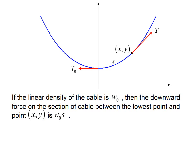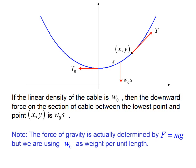If the linear density of the cable is w sub o, then the downward force on the section of cable between the lowest point and the point xy is w sub o s. Note, the force of gravity is actually determined by f equals mg, but we are using w sub o as weight per unit length.